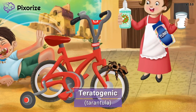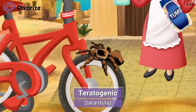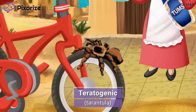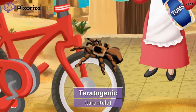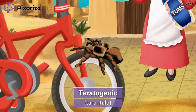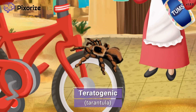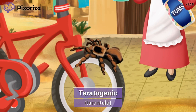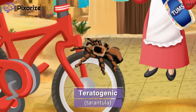Take a look at that tarantula on the boy's bicycle tire. The big tarantula scared the boy, and that's what caused him to fall off the bicycle into the dirt. Here at Pixerize, we use a tarantula to symbolize that a drug is teratogenic, or toxic to the fetus. We mentioned earlier that it can cause tooth discoloration in the fetus, but more than that, it can also impair bone mineralization. Because of this, tetracyclines should not be given to pregnant women.